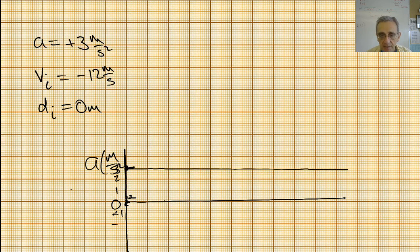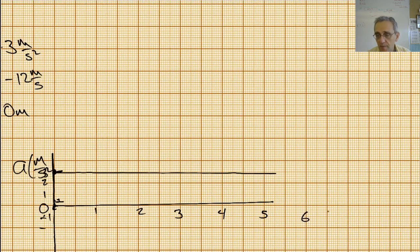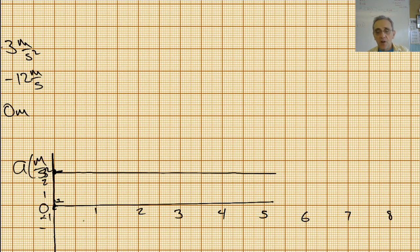This is 1, 2, 3, 4, 5, 6 — we'll pull this over a bit — 7, 8. Notice I'm using two spaces for one second on the time axis.